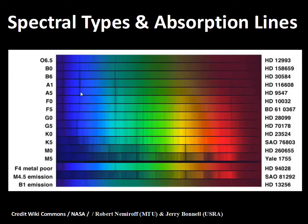The first classification of spectral types was based on how dark the hydrogen absorption lines were — how much absorption was occurring at hydrogen wavelengths. This is a line of hydrogen, another one here, another one out in the red. The ones where these lines were the darkest were called A, next darkest B.